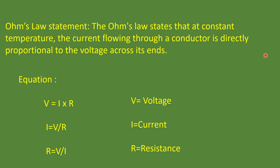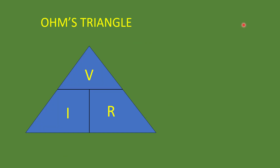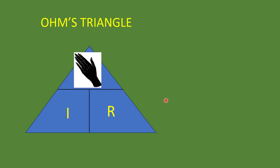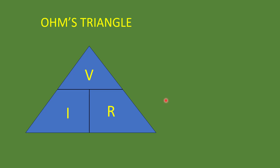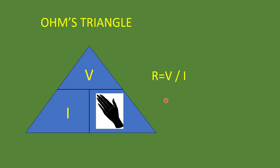If you find it difficult to remember these equations, you can use a method called Ohm's triangle. The upper portion is V, the lower left is I, and the lower right is R. If you want to find voltage, cover the V part and you can see I and R, giving V equals I times R. If you want to find current, cover the I part: I equals V divided by R. If you are looking for resistance, cover R: R equals V divided by I. Just remember this triangle and the three letters V, I, R — you can derive all three formulas.